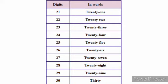21: T-W-E-N-T-Y O-N-E — 21. 22: T-W-E-N-T-Y T-W-O — 22. 23: T-W-E-N-T-Y T-H-R-E-E — 23.